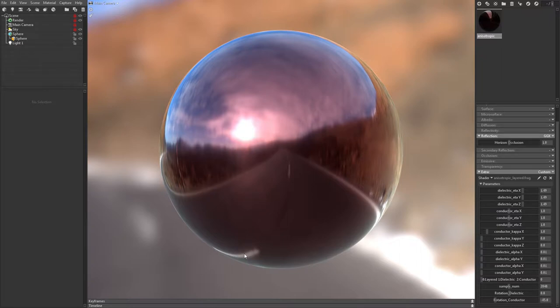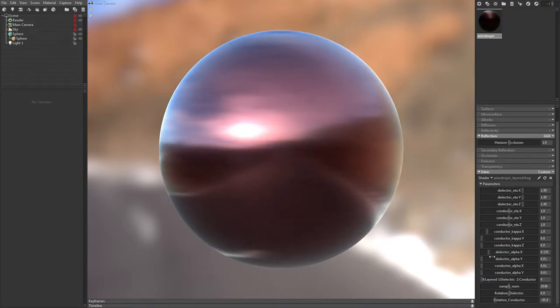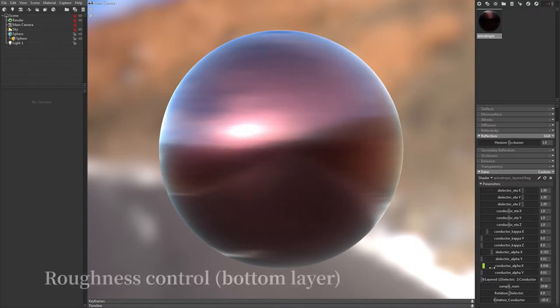Let's start with manipulating roughness of each layer. Now, the roughness of the top layer is manipulated. And now, the roughness of the bottom layer is manipulated.